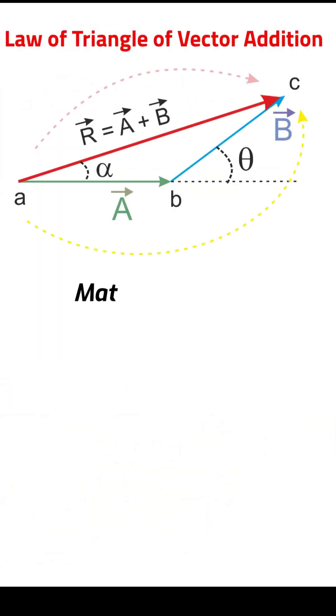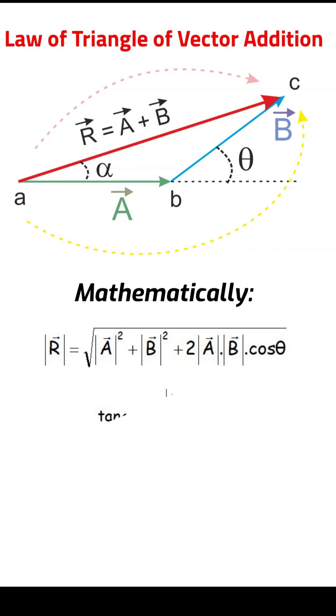Now mathematically these are the formulas we use for getting the value of R, that is the resultant, and the value of alpha, that is the angle of resultant with the first vector A.